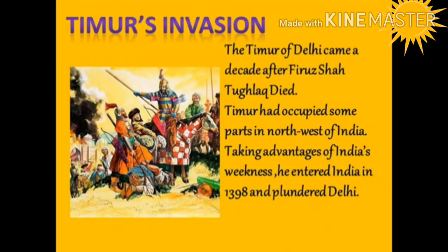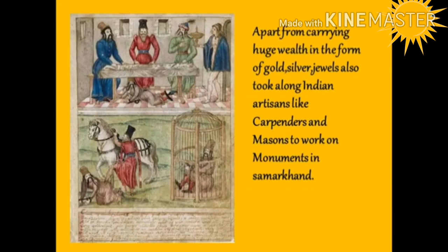Taimur's Invasion, 1398. The sacking and massacre by Tamerlane (Taimur) of India came a decade after Firoz Shah Tughluq died. As ruler of the region around Samarkand in Central Asia, Taimur had occupied parts of north-western India. Taking advantage of India's weakness, he entered India in December 1398 and plundered Delhi. Punjab and the Delhi city suffered most from Taimur's raid. Apart from carrying huge wealth in gold, silver, and jewels, he also took Indian artisans such as carpenters and masons to work on monuments in Samarkand.